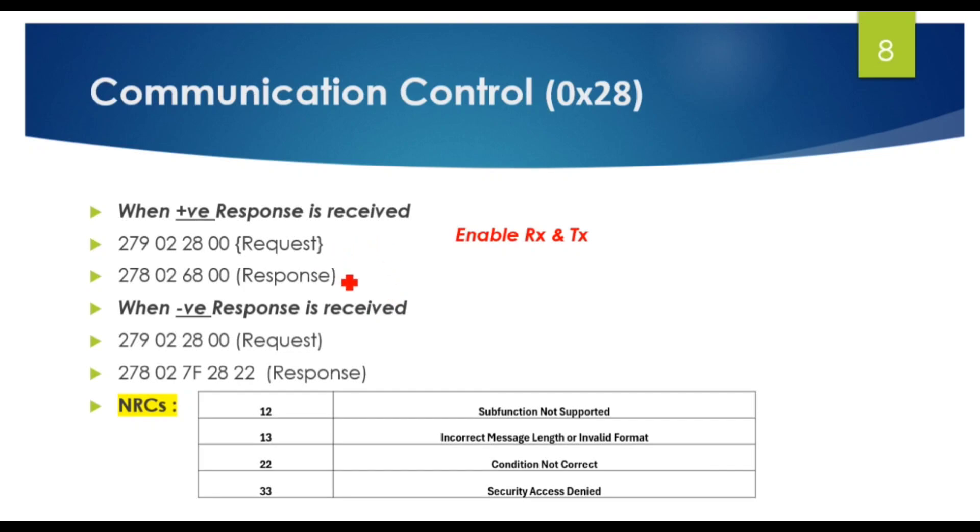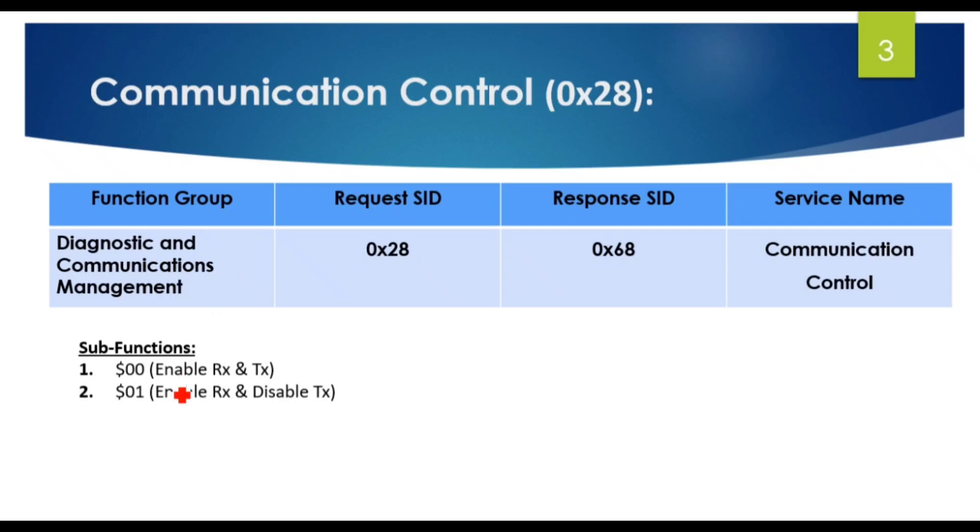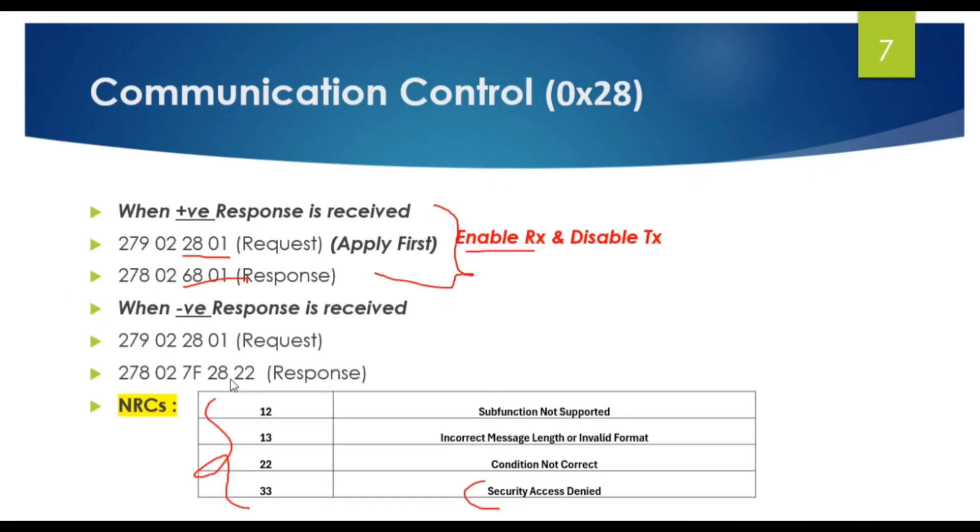Once 0x2801 is done, after you have completed your vehicle diagnostic, you can send the 0x2800 request to enable RX and TX. This means 0x2800 will enable both receiving and transmitting messages.